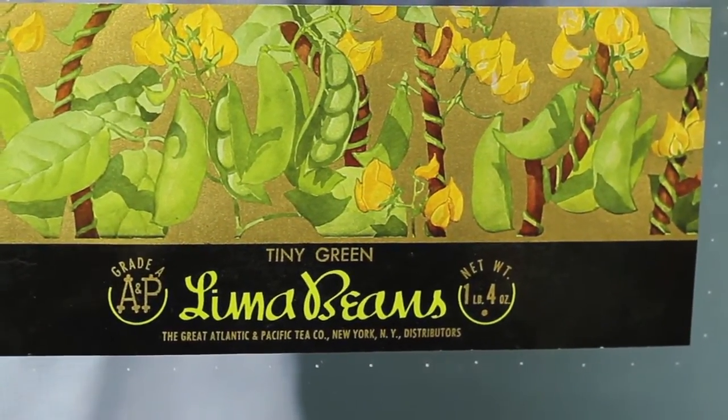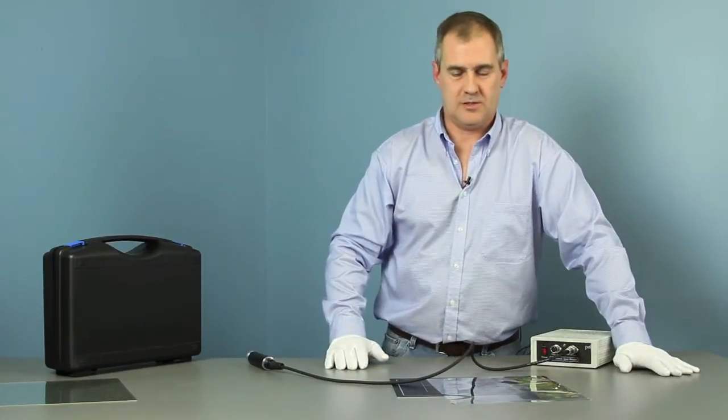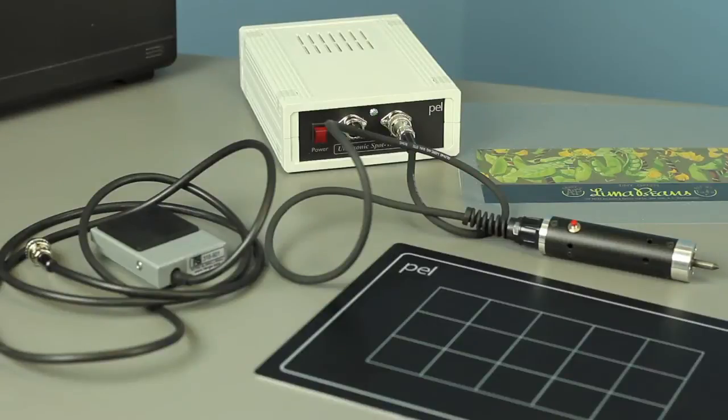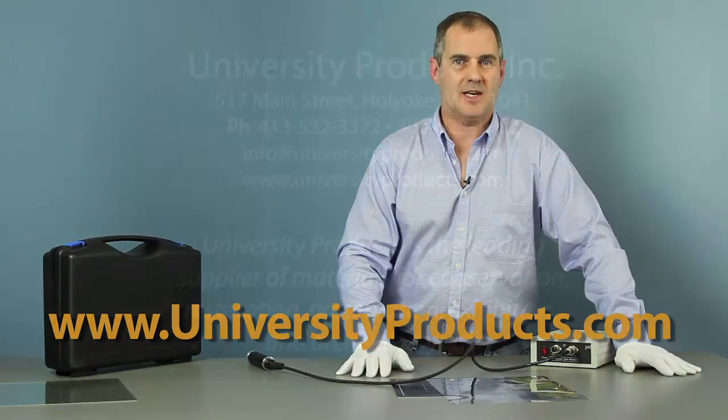You can also use it to create pockets within pocket pages, natural history to put seeds in with the plants they come from, a variety of uses for this machine. You can get it at www.universityproducts.com, available at both 110 and 220 volt.